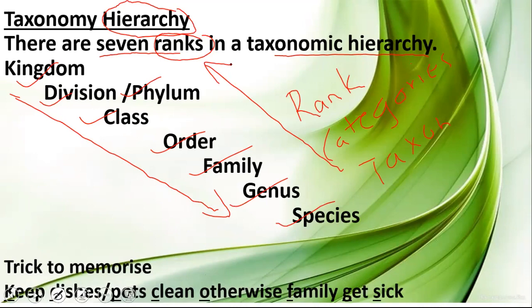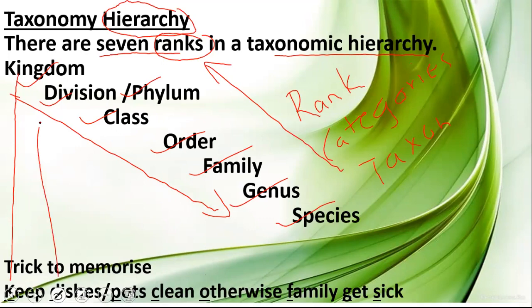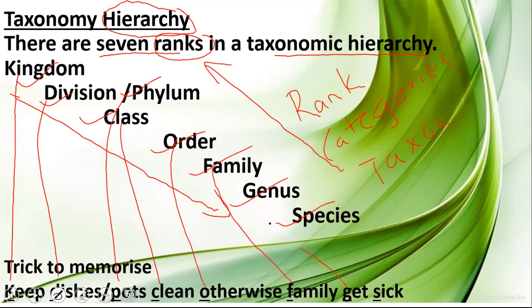Here's one very sensible sentence. When you remember this sentence, it will help you to understand the different ranks of taxonomic hierarchy. The sentence is: 'Keep recess parts clean, otherwise family get sick.' In this sentence, the first letter of each word signifies the different ranks of taxonomic hierarchy. K is for Kingdom, D is for Division (we write Division for plants, Phylum for animals), C is for Class, O is for Order, F is for Family, G is for Genus, and S is for Species.